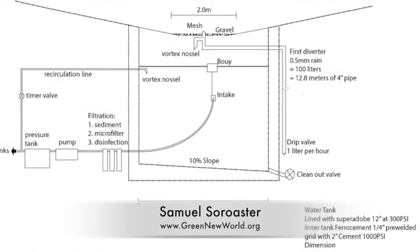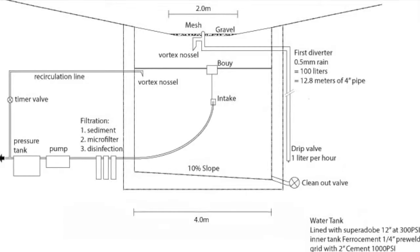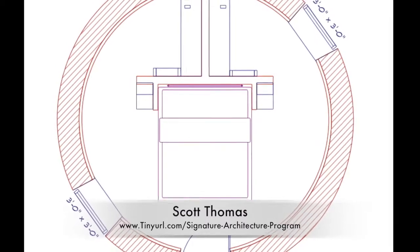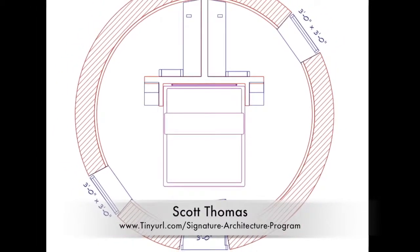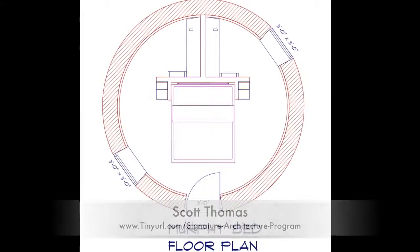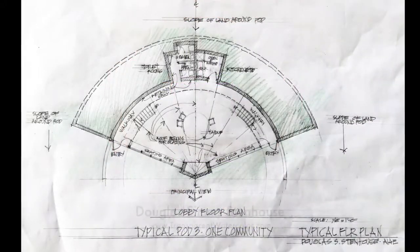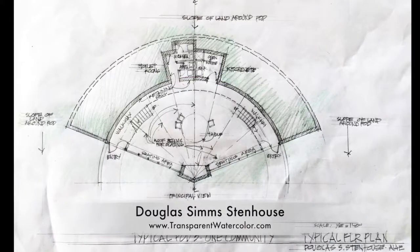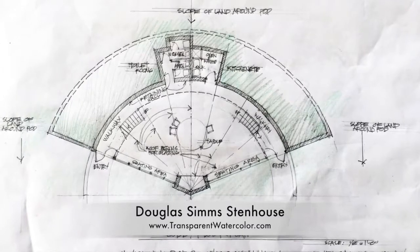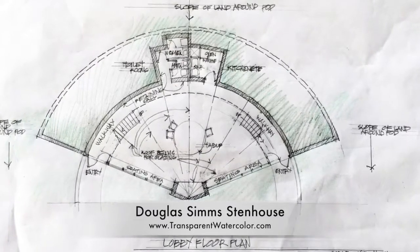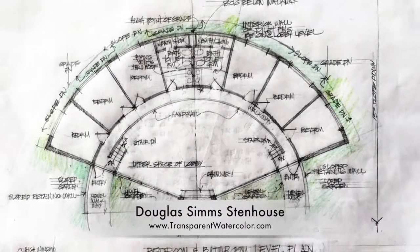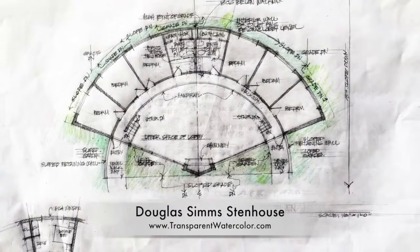The central tank you see here will use rainwater for washing hands, then reuse the hand-washing greywater to flush the toilets. Scott Thomas and his Shadow Ridge Signature Architecture Program team also finished putting this concept design into CAD for the upcoming crowdfunding campaign. The Murphy Bed Dome features a fold-down bed, his and hers closet area, and loft. Douglas Simms Stenhouse, architect and watercolor artist, also produced these updated drawings for Pod 3 that will be Cobb and Rammed Earth. This is the ground floor featuring a men's and women's bathroom, shared kitchenette, and large social area and central fireplace.